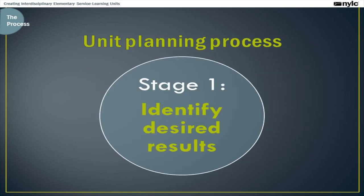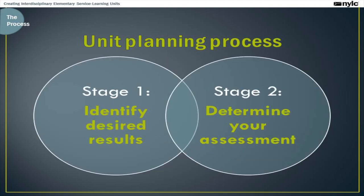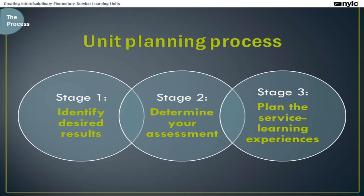So speaking of an overview of the process, I'm going to give you a brief overview of what the unit planning process looks like. The process is made up of four stages that align with the backward design format. In the first stage, you will identify your desired results — what you want students to know, do, and understand by the end of the unit. In stage two, you're going to determine what evidence students must demonstrate to show mastery of the concepts, planning both your formative and summative assessments. In the third stage, you'll plan the service learning and classroom learning experiences. I like to think of this as the lesson planning phase, where you're looking at the day-to-day activities both in the classroom and in the community.